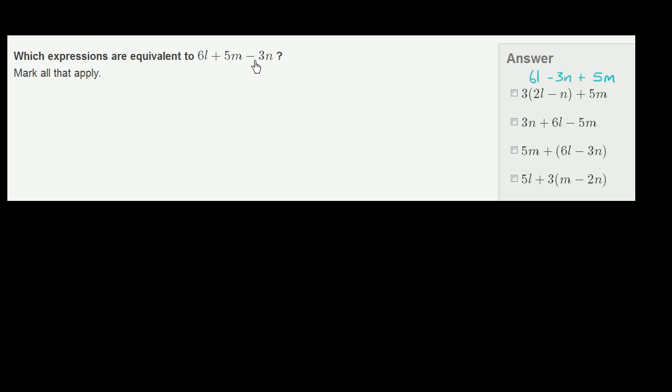And this expression and this expression are going to be equivalent if you just swap the negative 3n and the 5m, which you could completely do. Addition is commutative. It doesn't matter which order you actually add in. So this is legitimate.